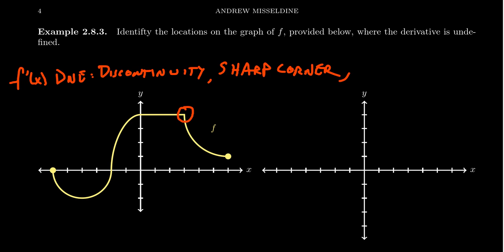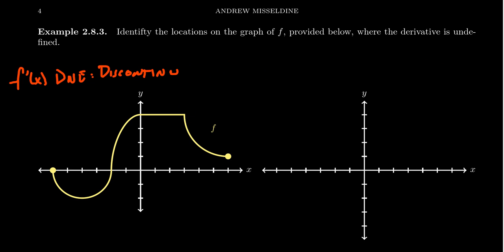The other thing we have to look for is vertical tangent lines. Our graph has some of those. There would be a vertical tangent line right here, but it's already a corner, so we're throwing that one out. There's going to be a vertical tangent line at x equals negative 2, and also at x equals negative 6. So to summarize, the derivative will be undefined at x equals negative 6, x equals negative 2, and at x equals 3.